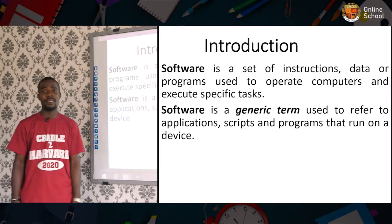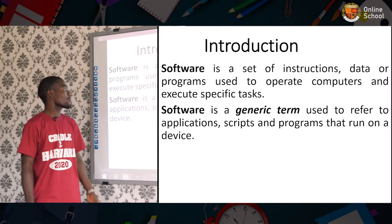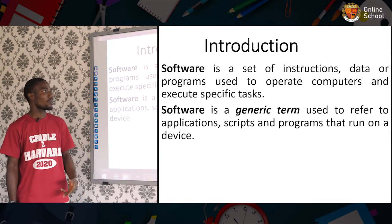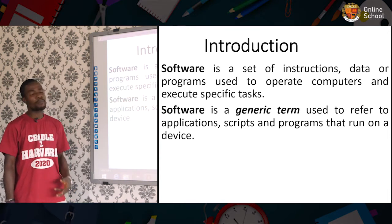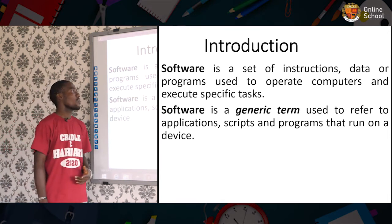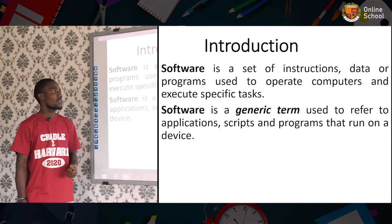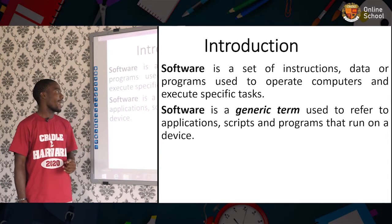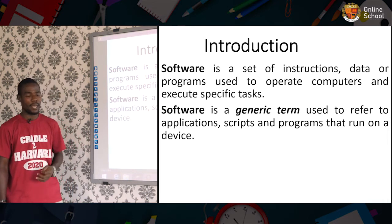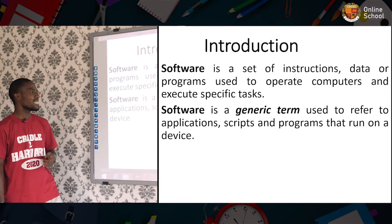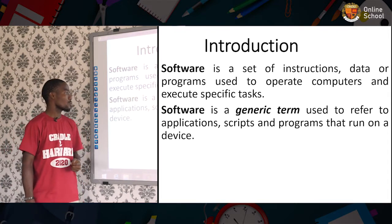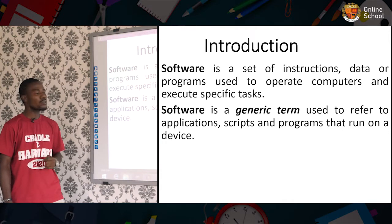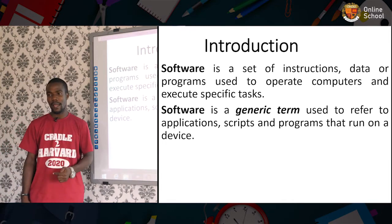As an introduction, what is software? Software is a set of instructions, data, or programs used to operate a computer and execute specific tasks. Software is a generic name used to refer to applications, scripts, and programs that run on any computing device.